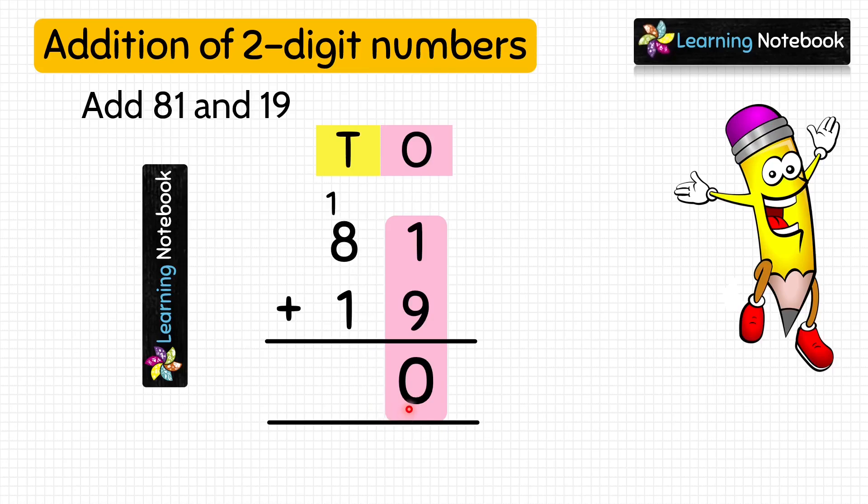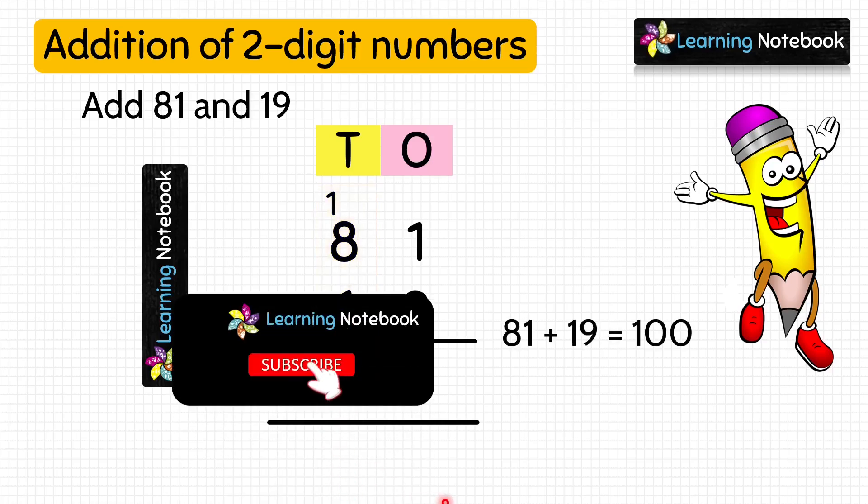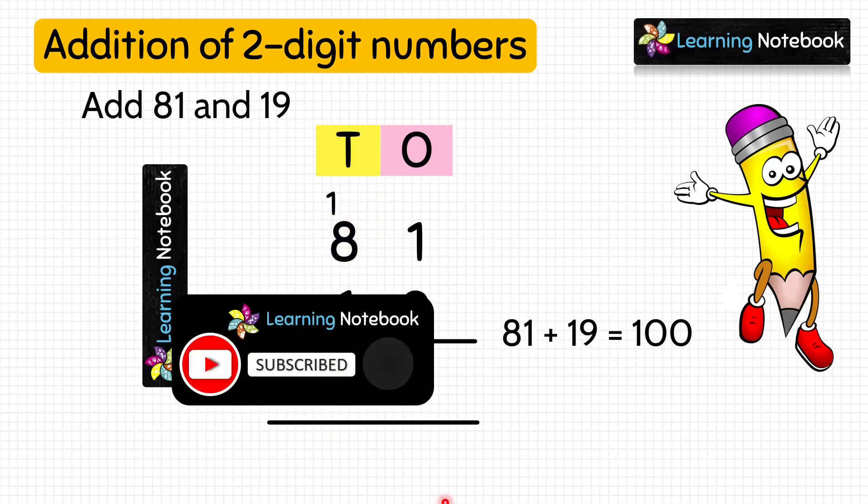Now we will add the digits at tens place. 1 carry plus 8 equals 9, and 9 plus 1 equals 10. So the answer is 100. 81 plus 19 equals 100.